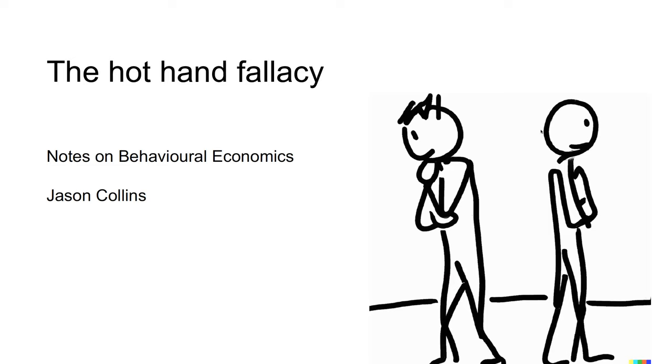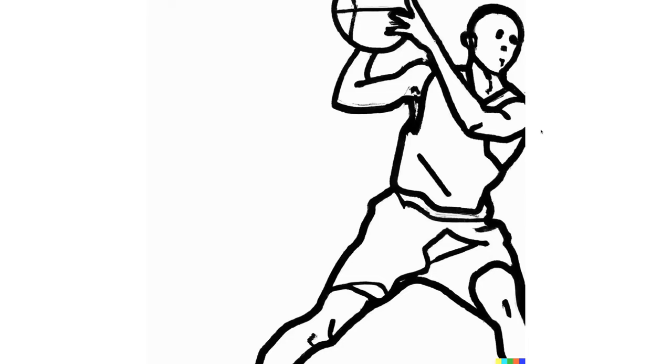A person subject to the hot hand fallacy believes a streak will persist despite each outcome being independent of the last. For example, suppose a spectator observes a basketball player taking a series of shots during a game. The spectator makes predictions based on the observed shots, with good shots predicted to be more likely following a streak of successful shots. After a series of good shots, they believe that the player has a hot hand.